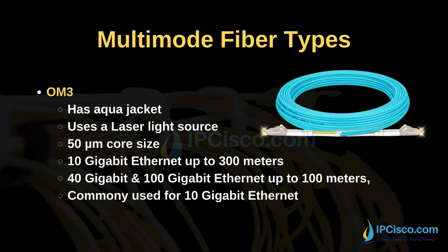At OM3, our color is changing. OM3 has an aqua jacket. It uses a laser light source. The core size is similar to OM2 at 50 micrometers. OM3 supports 10 gigabit ethernet up to 300 meters. It also supports 40 gigabit and 100 gigabit ethernet up to 100 meters. It is commonly used for 10 gigabit ethernet.